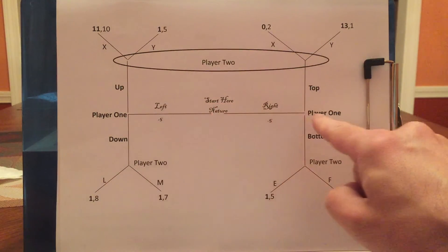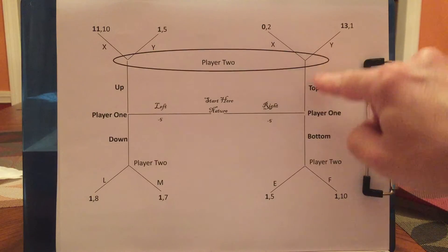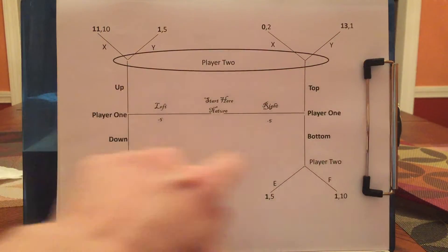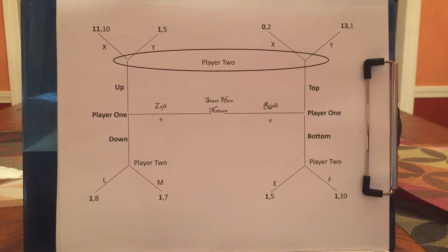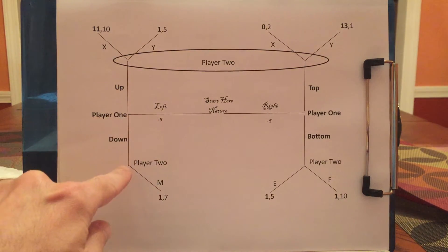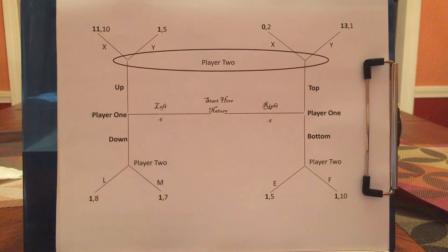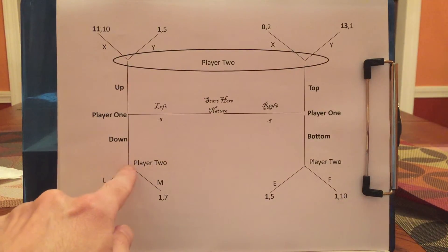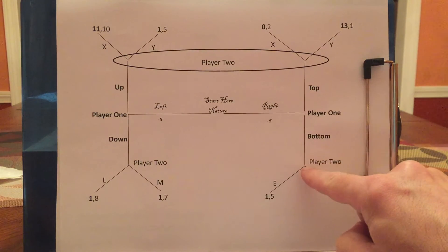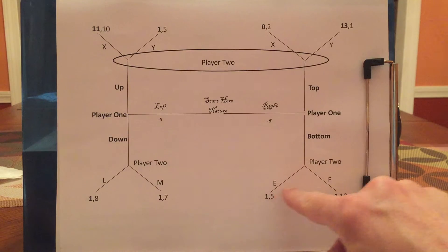In contrast, if nature moves right — and nature moves right half the time — player 1 will know that he's a righty and will get to go to the top or the bottom. Because there's no oval around where player 1 is, player 1 knows what nature does. If nature picks left and player 1 says down, player 2 will find himself right here, so player 2 will know he's here and will pick L or M. If nature picks right and player 1 decides to go to the bottom, player 2 will know he's here and will pick E or F.